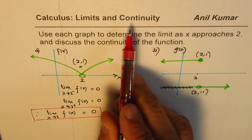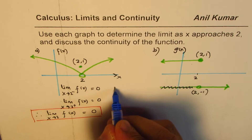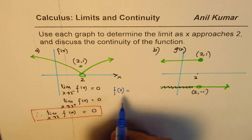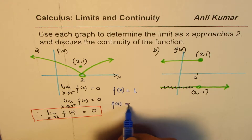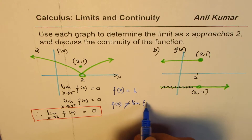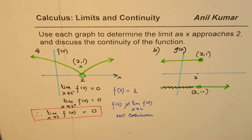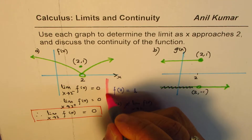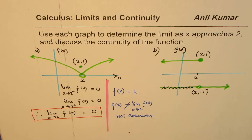The second part is about continuity. We can find continuity from the value of the function. The value of f at 2 is 1. Since f(2) is not equal to the limit of f(x) as x approaches 2, this function is not continuous. For continuity, the limit and the value of the function at that point should be the same — that's the whole criterion.